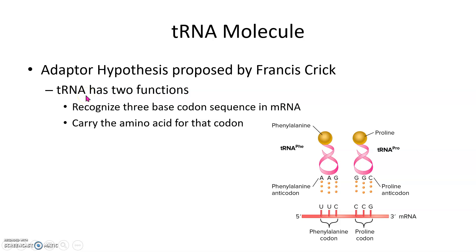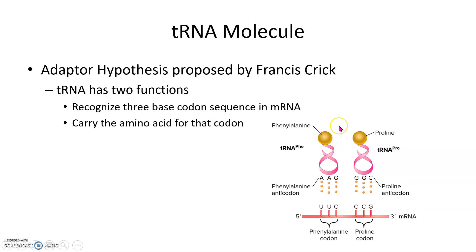tRNA has to serve two functions: recognize the base pair on the mRNA — the codon — and carry the amino acid that corresponds to that codon. So this is our tRNA molecule. It has an anticodon that's going to be complementary to the codon on the mRNA, and it carries the corresponding amino acid with it.